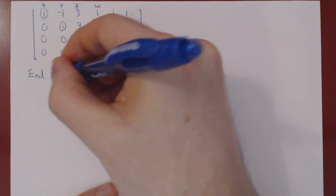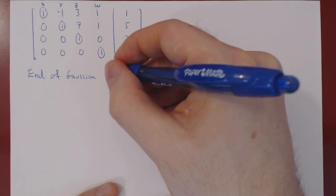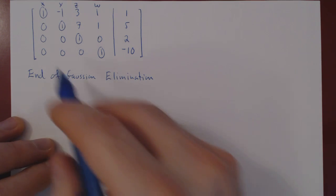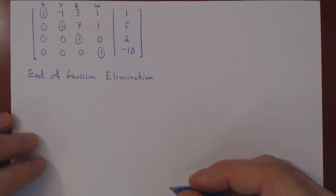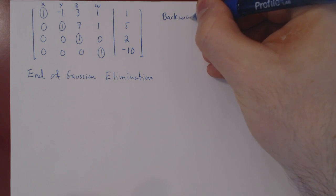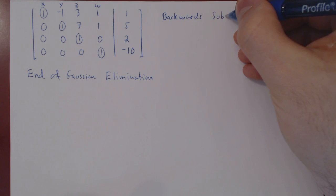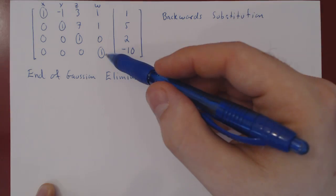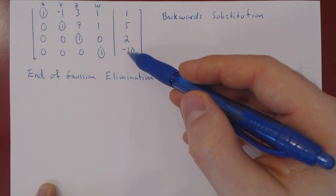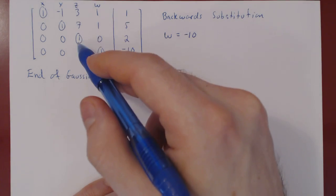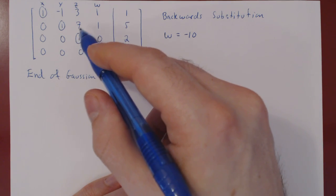Since we have reached the bottom row, this is the end of Gaussian elimination. Because every variable is leading and we have a unique solution, we now use back substitution. Starting from the bottom row, we can solve for w, which is simply equal to negative ten. Moving up one row, there is no w term, so z equals two.